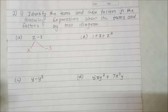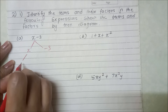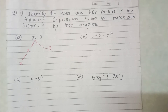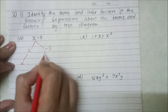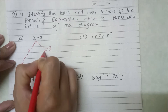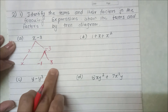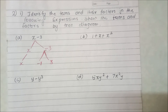Now if we talk about the factors: x has no further factors — x is just x. For minus 3, the factors are minus 1 and 3, because minus 1 multiplied by 3 gives minus 3. So minus 1 and 3 are the two factors of the term minus 3.